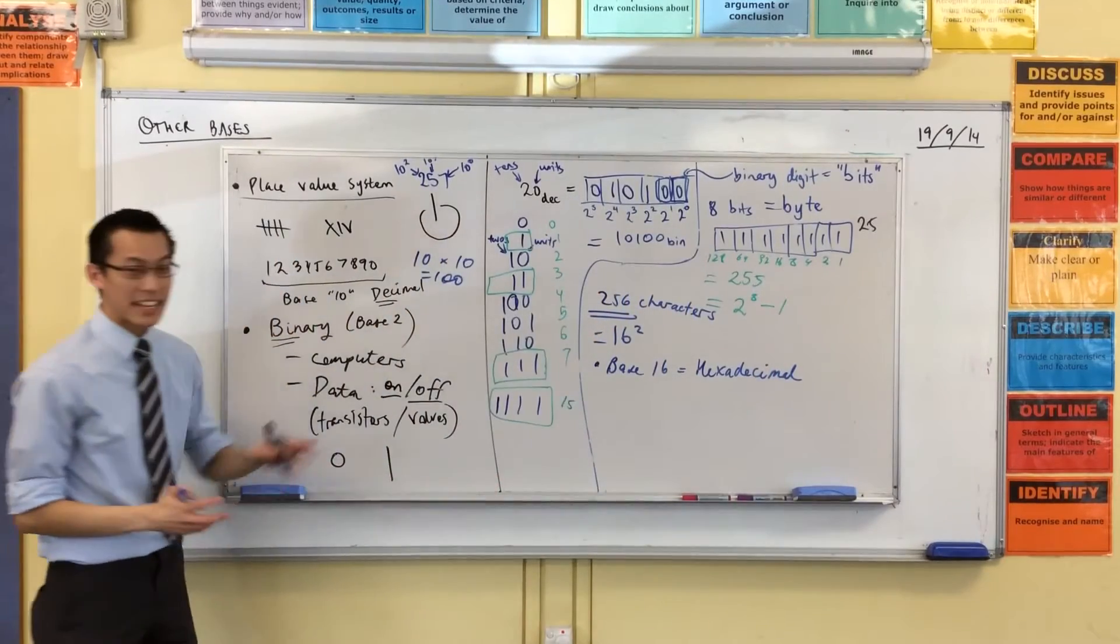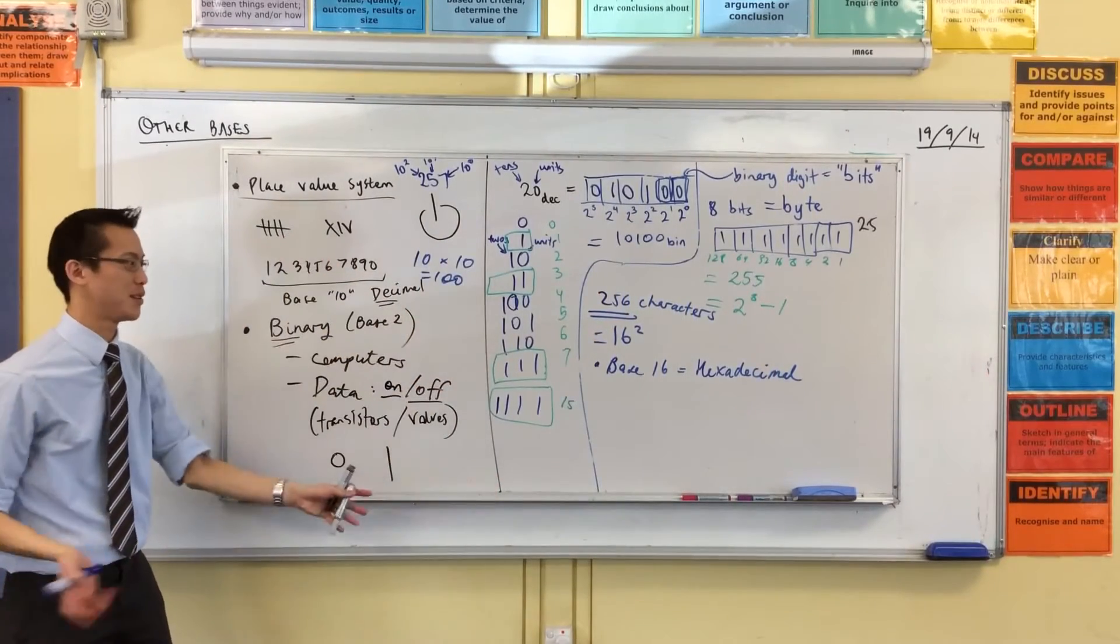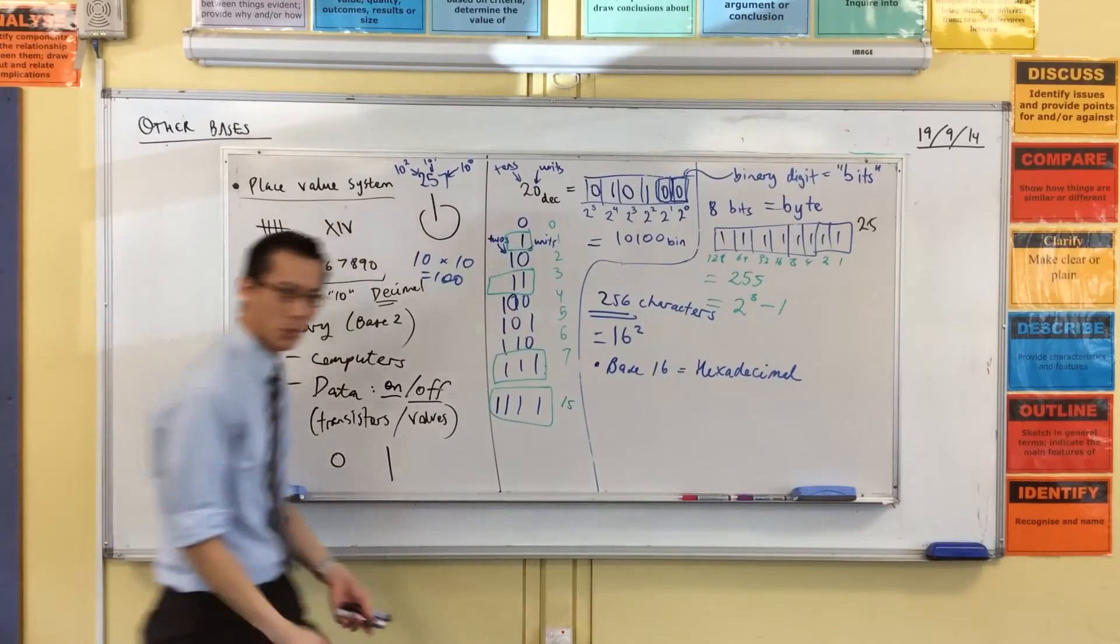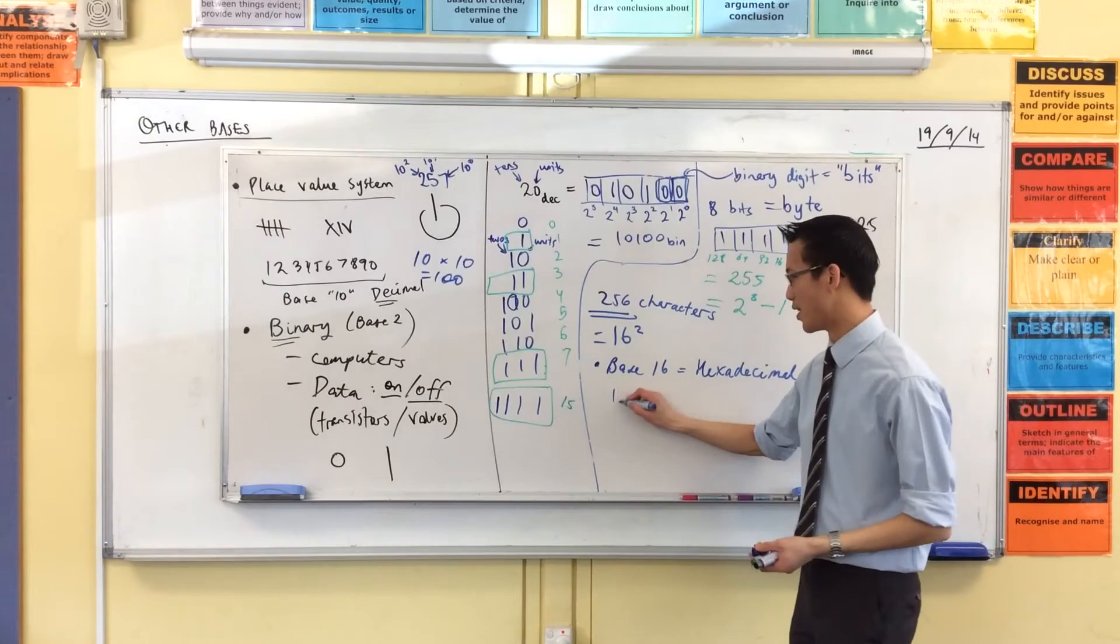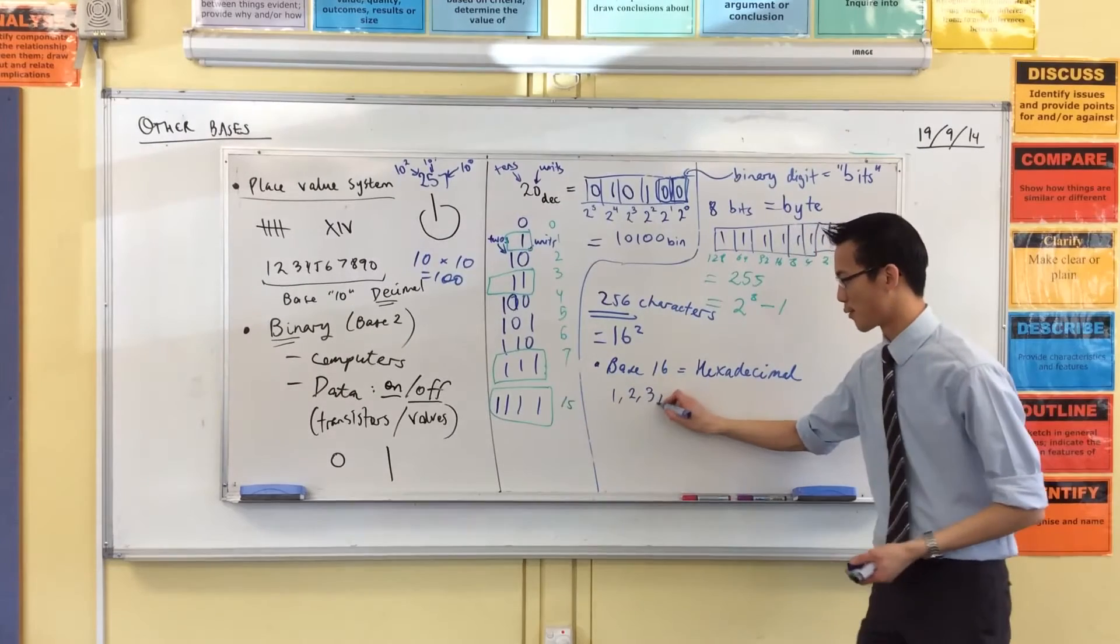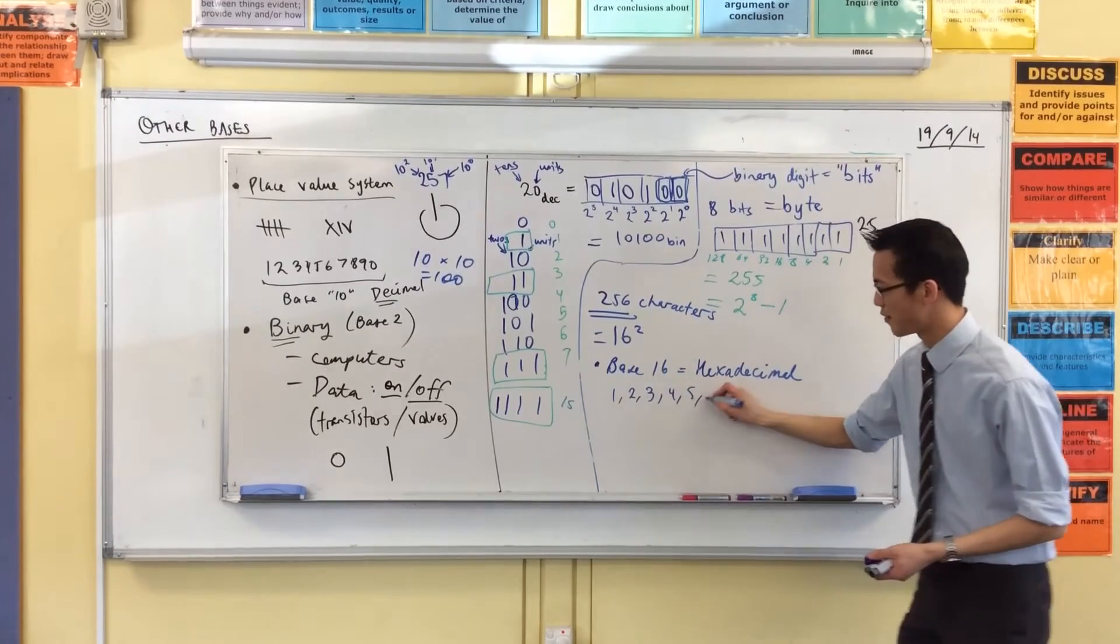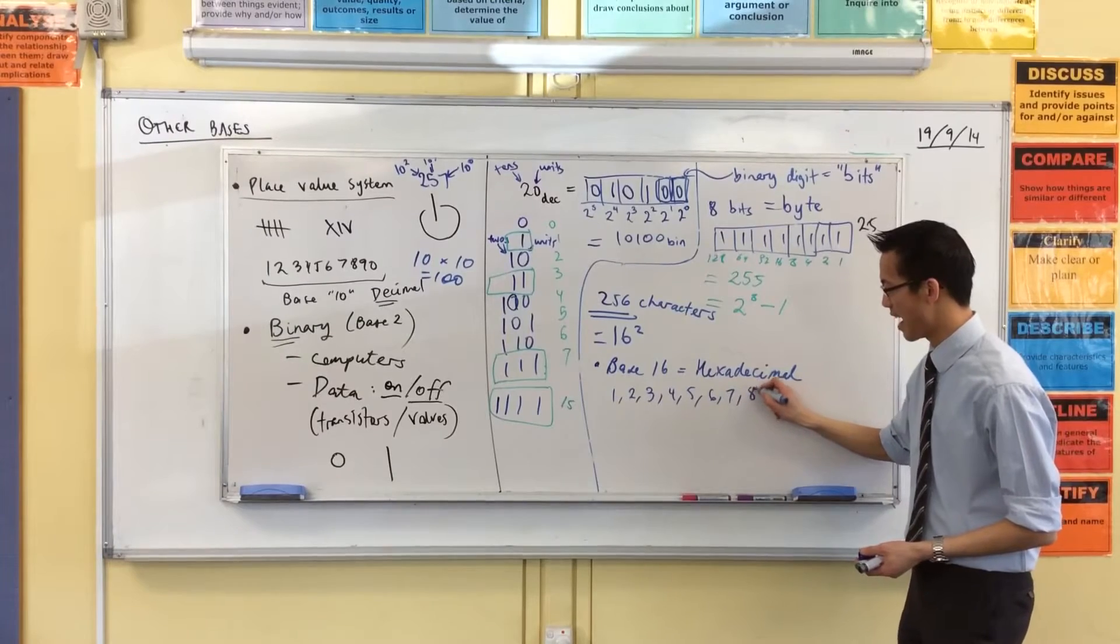Now, again, this system's been born out of computers. So here's the way it counts. I'm going to count in hexadecimal for you, okay, you ready? Here we go. 1, 2, 3, 4, 5, 6, 7, 8, 9, so far so good, right?